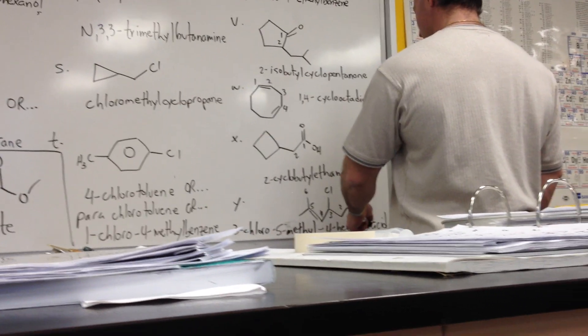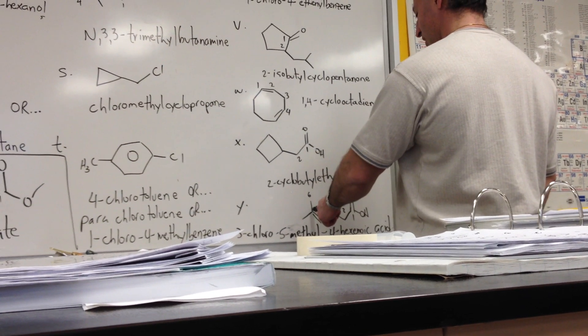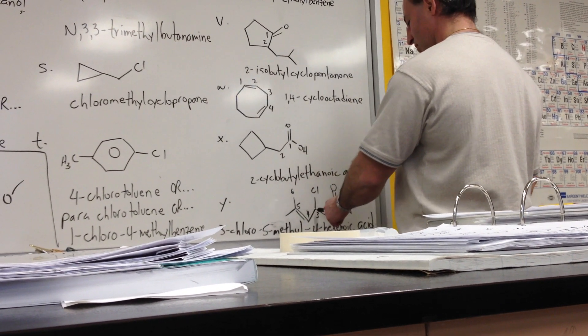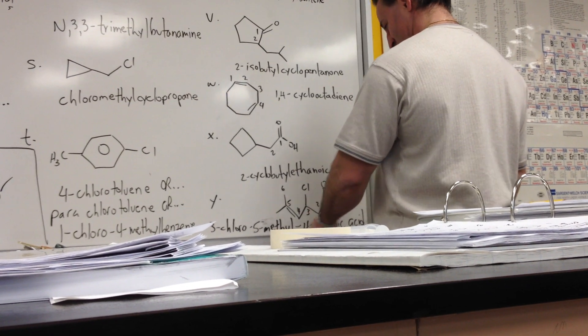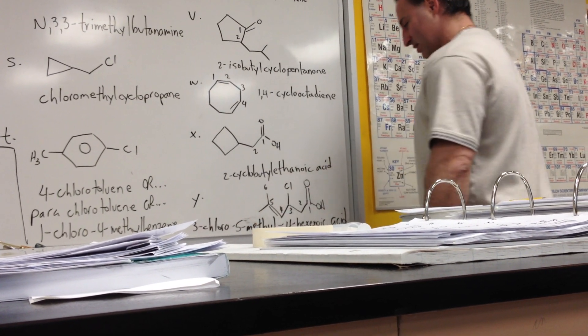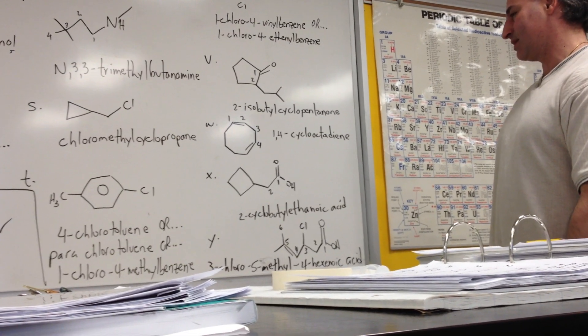Y is 6 carbons long in the longest chain, with a 3-chloro substituent, a methyl substituent, and a double bond at the fourth position, so we call it 3-chloro-5-methyl-4-hexenoic acid.